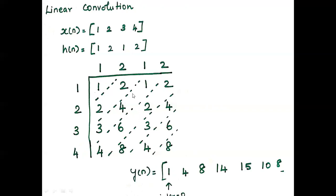We then perform addition diagonally. The result Y(n) equals 1, 4, 8, 14, 15, 10, and 8. The index starts from 0, and for this output the last index value is n minus 1. Since n equals 7, the last index is 7 minus 1 equals 6.